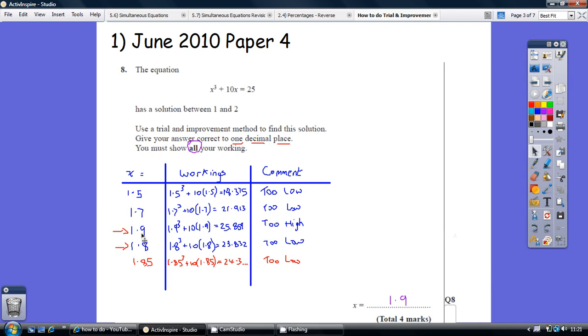Now go for 1.8. Plug that in, you get 23.832. That's too low, lower than 25. So really, these are our goal posts. 1.8 is too low, 1.9 is too high.